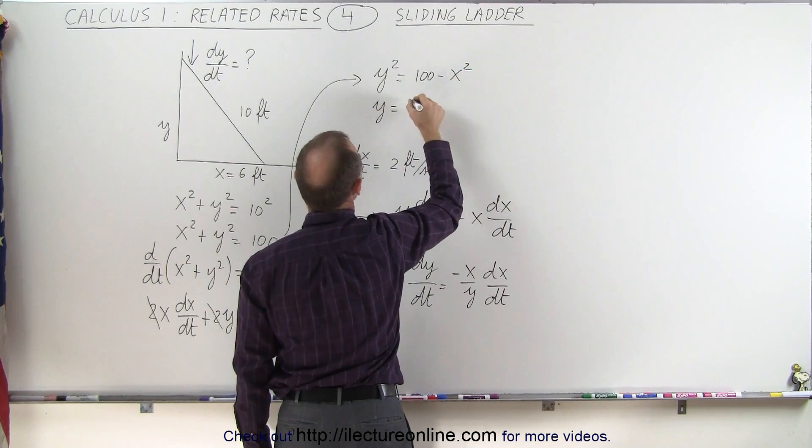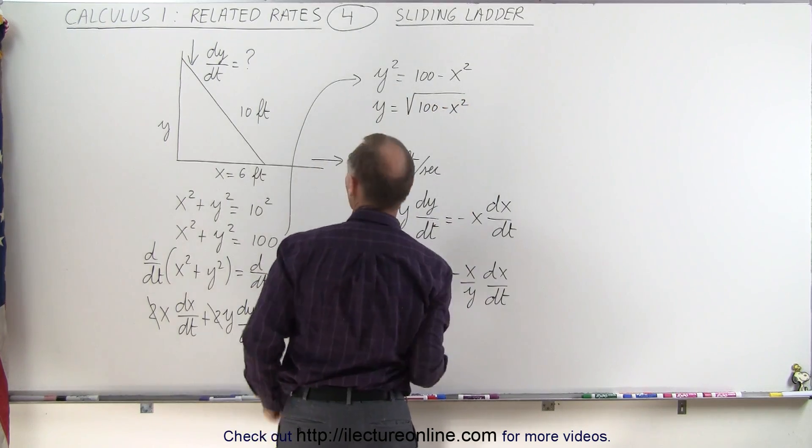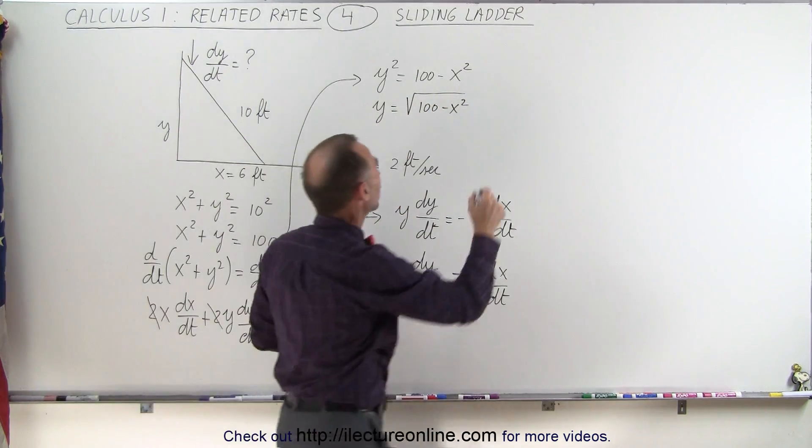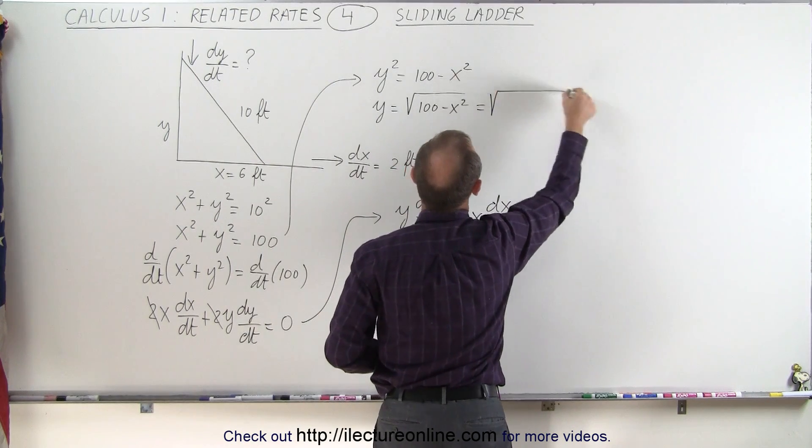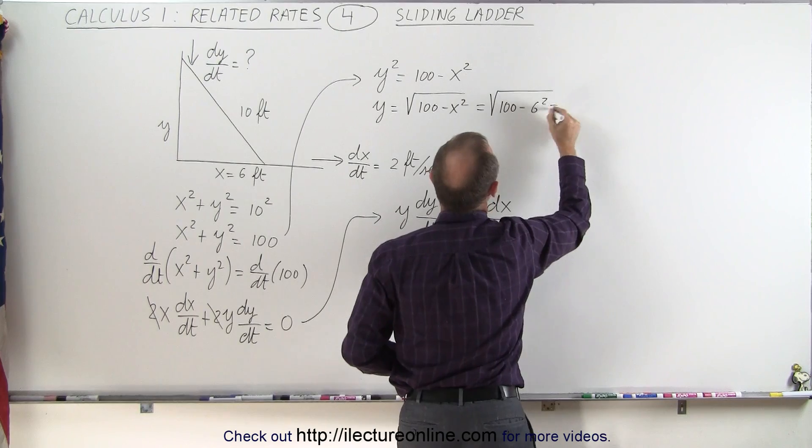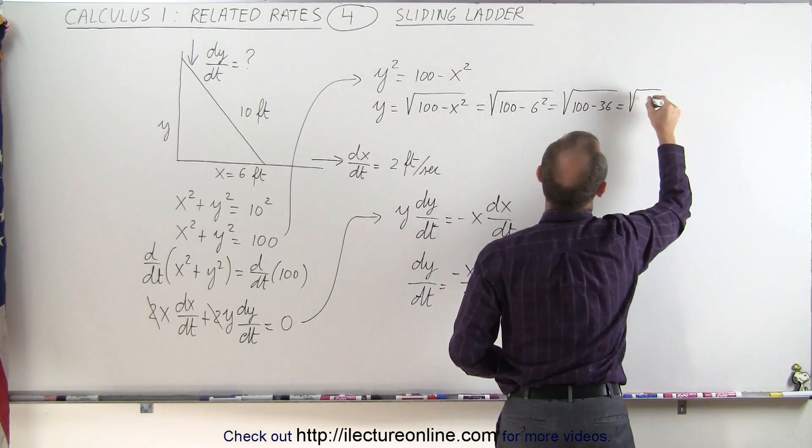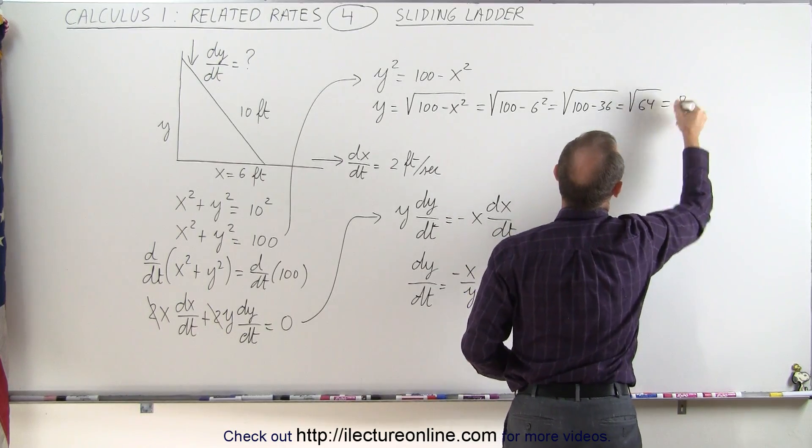Or y equals the square root of 100 minus x squared. Now we're given x to be 6 feet, so this equals the square root of 100 minus 6 squared, which equals the square root of 100 minus 36, which is the square root of 64, which equals 8.